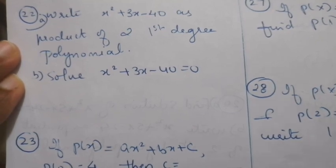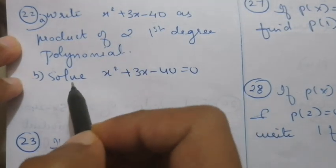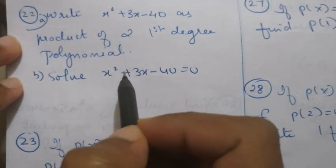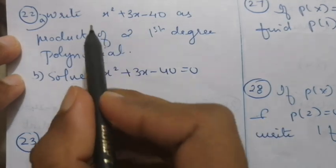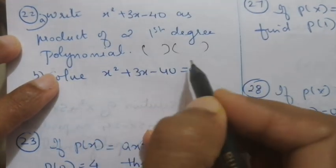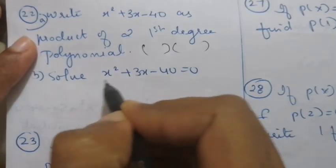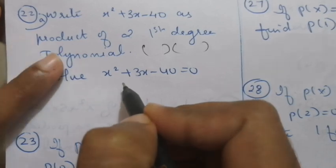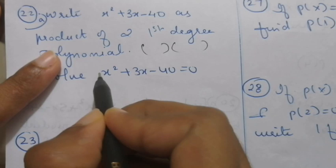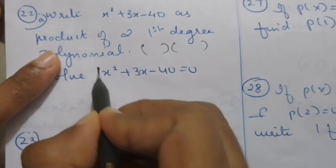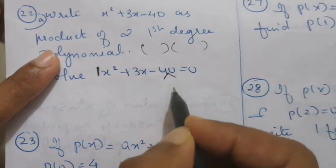Question number 22: write x squared plus 3x minus 40 as the product of two first degree polynomials, and solve x squared plus 3x minus 40 equals 0. You have to find two factors and write in product form. Here is an easy method: if the coefficient of x squared is 1, just look at the constant 40.